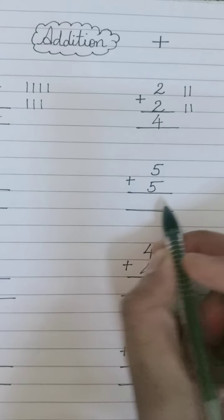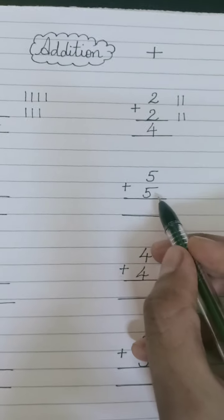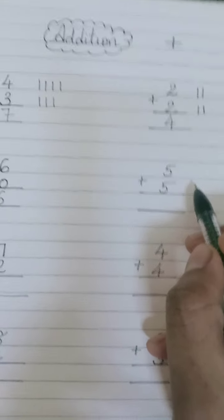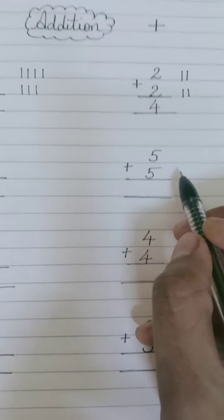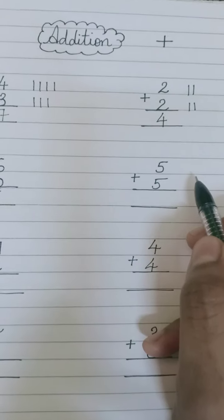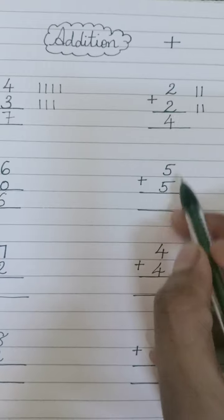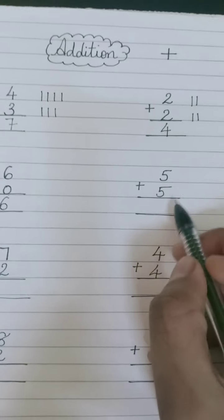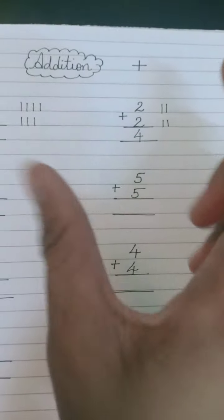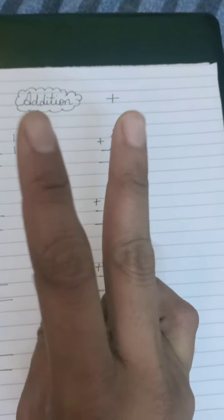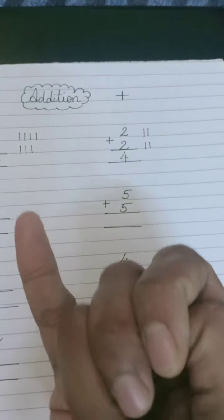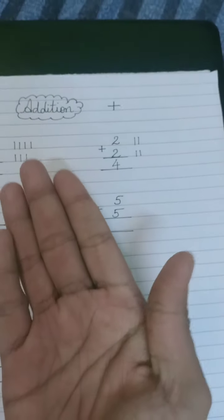Now come to number four question: five plus five. You can use the line method, but now I'll tell you another technique. Whichever number is bigger, keep that in your mind. If you teach children this way from first standard onwards, it will be much easier for them. Here both numbers are the same, so keep either five in your mind. For the remaining five, I will count on my fingers: one, two, three, four, five. I will do like this: one, two, three, four, five.